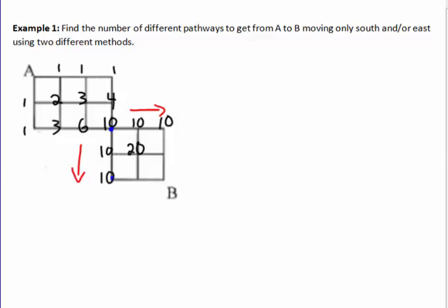And now we just keep our adding. 10 and 10 is 20. 20 and 10 is 30. 20 and 10 is 30 again. And in the end, we add 30 and 30 and we'll get 60 ways.